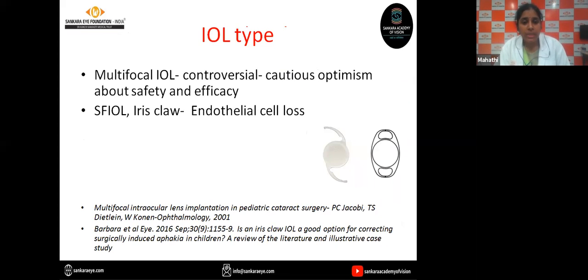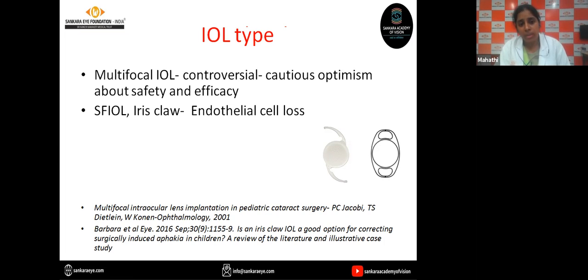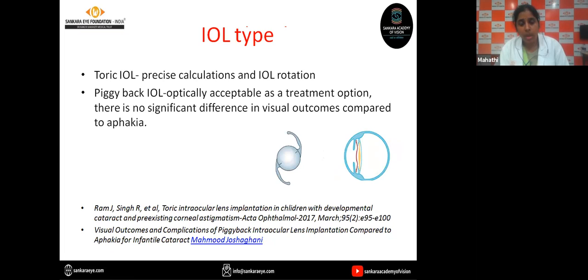Coming to the IOL type — newer IOLs like multifocal IOLs, toric IOLs, and iris-fixated lenses have been tried in children. The use of multifocal IOLs in children is controversial as there is a higher chance of these surgeries failing; Jacobi et al. implanted multifocal IOLs in children and around half of them needed a reoperation. For toric IOLs, precise calculations are necessary and there is always a risk of IOL rotation because of capsular fibrosis. Though the toric IOL is optically acceptable as a treatment option, there is no significant difference in visual outcomes compared to a spherical IOL.